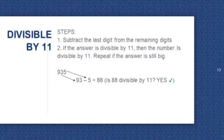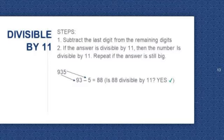Divisible by 11. Again, we need to follow a series of steps to determine whether a number is divisible by 11. Step 1: subtract the last digit from the remaining digits. Step 2: if the answer is divisible by 11, then the number is divisible by 11. Repeat if the answer is still big.